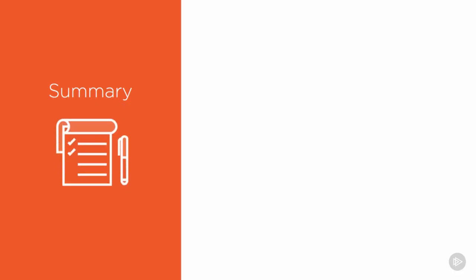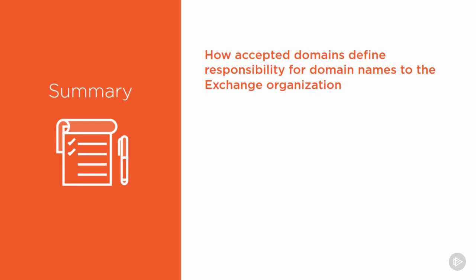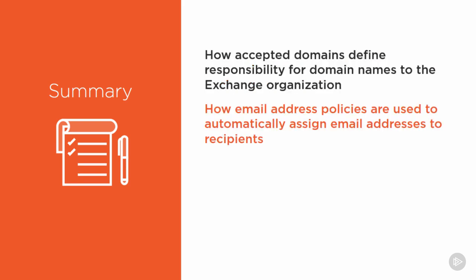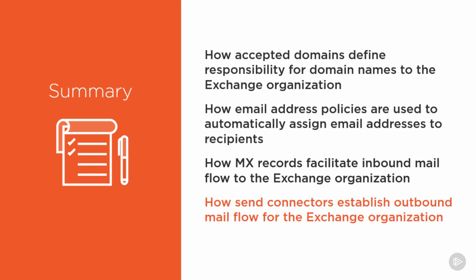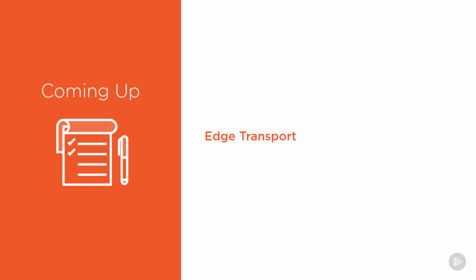In this module, we've looked at how accepted domains define responsibility for domain names to the Exchange organization, how email address policies automatically assign email addresses to recipients, how MX records facilitate inbound email flow, and how send connectors establish outbound mail flow. Coming up in the next module, we're going to look at the edge transport server role.